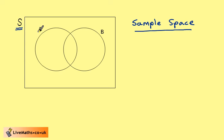S therefore represents everything that can happen. If we were rolling a die, S would represent the numbers 1 to 6. If we were tossing a coin, S would represent the outcomes head or tail.